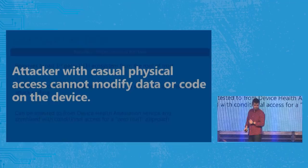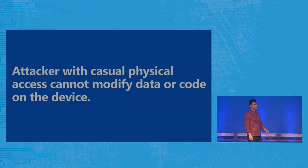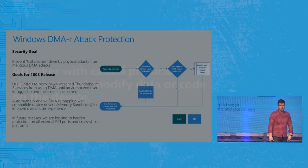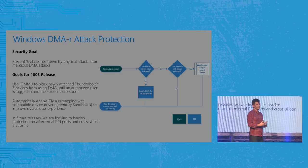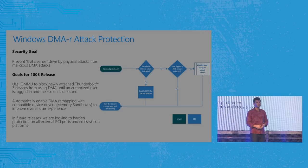We'd like to make the security claim that attackers with casual physical access can't control your device — we're not in a great space there today. Many of you are familiar with PCI Leech from Ulf, which means if you have an exposed DMA port you can simply plug into a Windows device, and if that device doesn't have IOMMU enabled, you can read arbitrary memory including credentials, BitLocker secrets, etc.